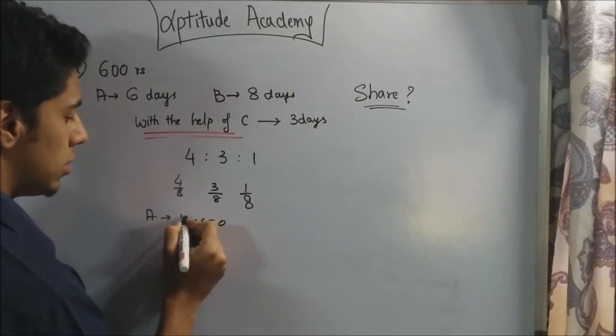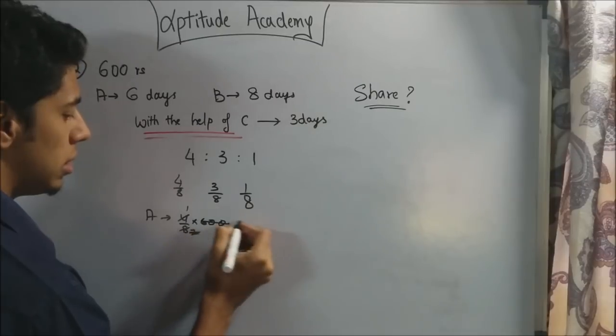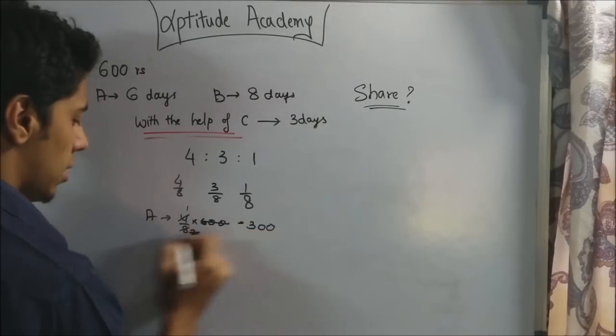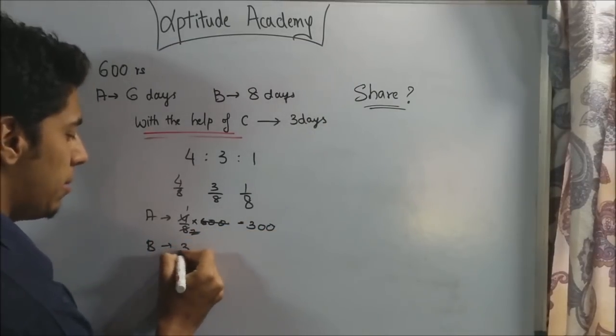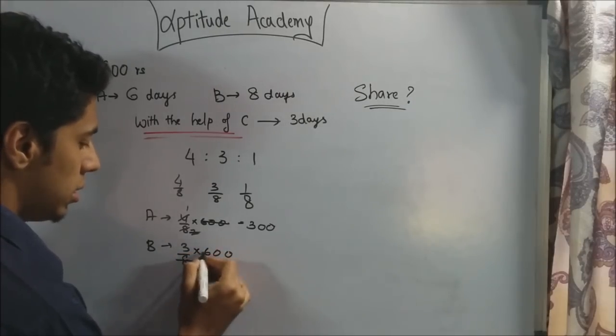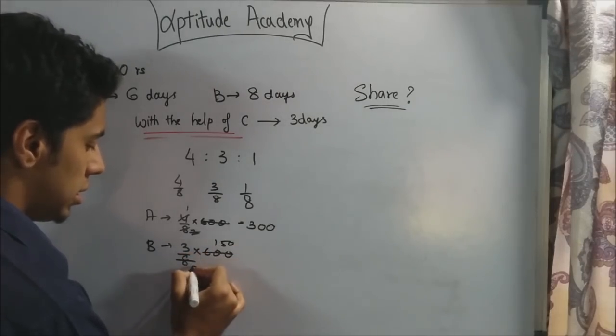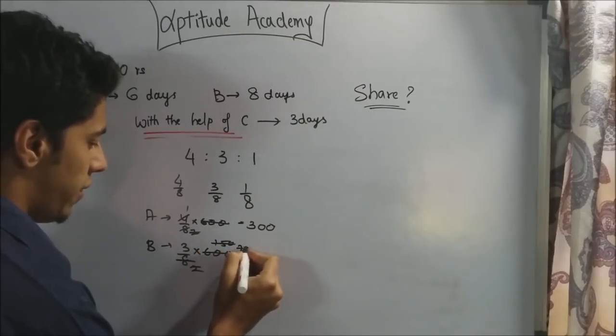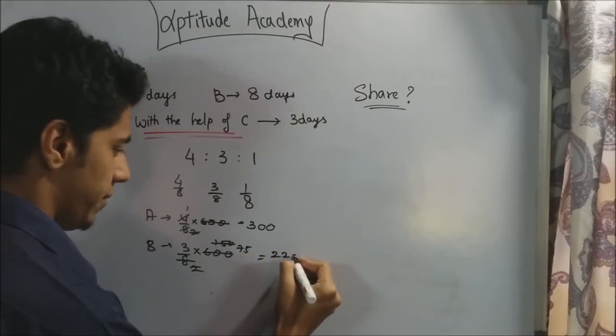A's share would be 4 by 8 into 600. This is 300. Similarly B should get 3 by 8th of 600 rupees. This is 225.